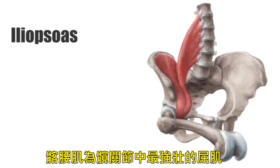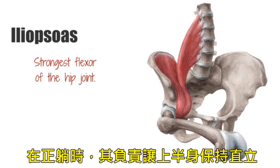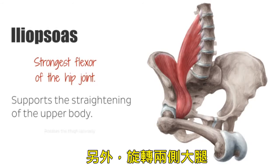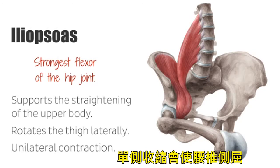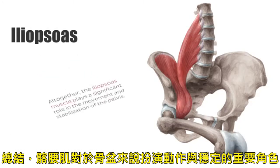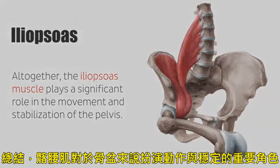The iliopsoas muscle is the strongest flexor of the hip joint, which makes it an important muscle for walking. In the supine position, it decisively supports the straightening of the upper body, for example during sit-ups. Furthermore, it rotates the thigh laterally. A unilateral contraction leads to a lateral flexion of the lumbar vertebral column. Altogether, the iliopsoas muscle plays a significant role in the movement and stabilization of the pelvis and the hip joint.